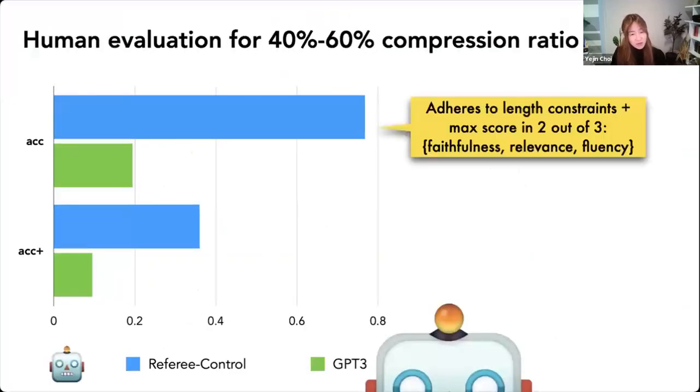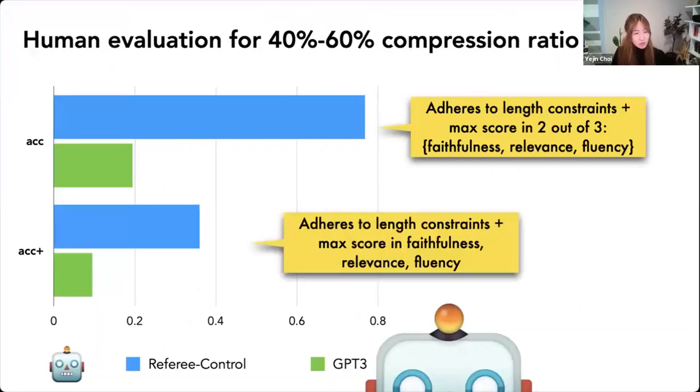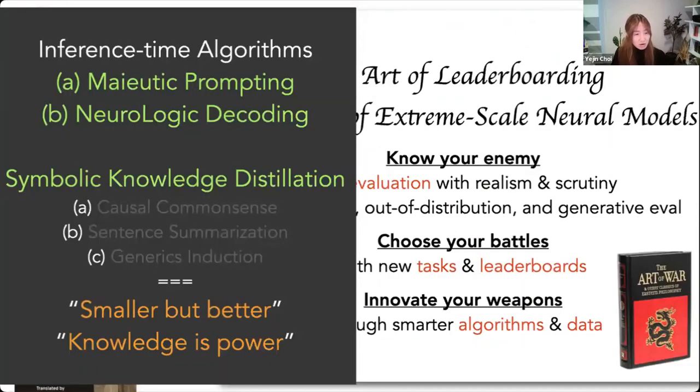Okay, so we found that if we do this, then we can really close the gap against GPT-3 or we can even outperform GPT-3, depending on what sort of criteria you measure. So that's sort of a quick summary of how symbolic knowledge distillation can be not only useful for generating common sense models, but also entirely different tasks such as sentence summarization. Now, finally, I'm going to tell you about generic knowledge induction, but before we get there, let's quickly look at this Inference Time Algorithm Neurologic Decoding, because there's going to be a content dependency there.